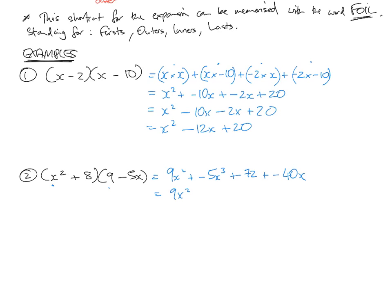So 9x² plus and minus becomes -5x³ plus 72 take 40x. Collect like terms. There's no like terms here, but formally we should put it in order of the exponents, so -5x³ + 9x² - 40x + 72. That's more properly written.